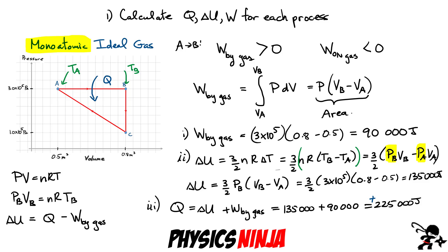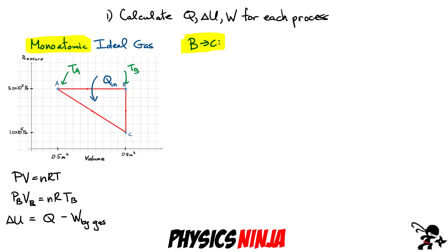Now let's look at process B to C. The first thing that should jump out is that the volumes are the same — V_B equals V_C — so there is no change in volume. There is a change in pressure, however. With no change in volume, the work done by the gas is zero by definition.